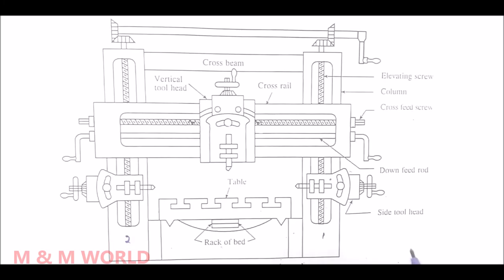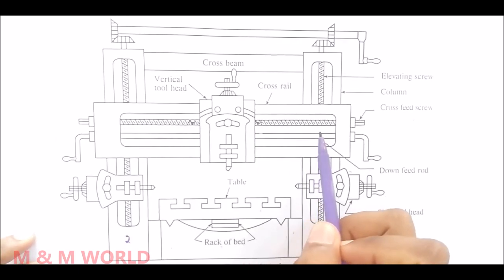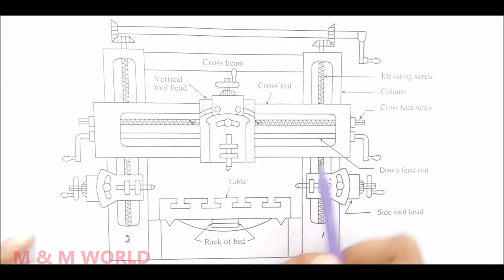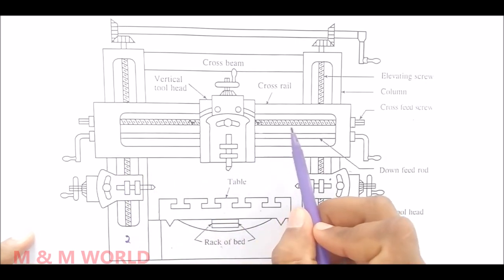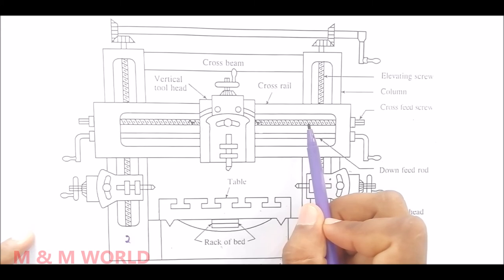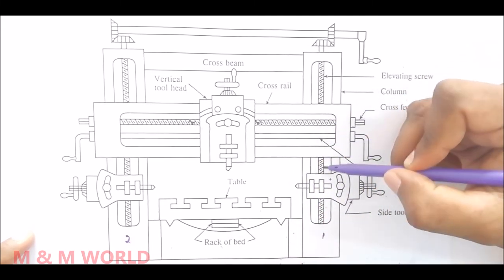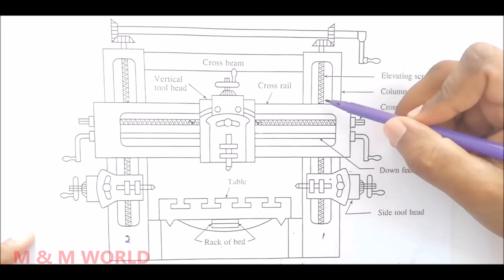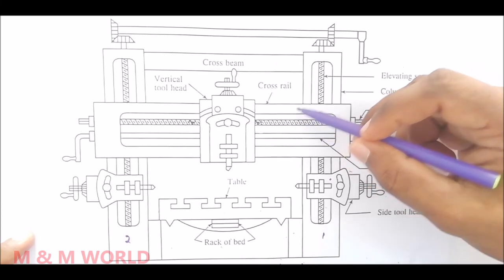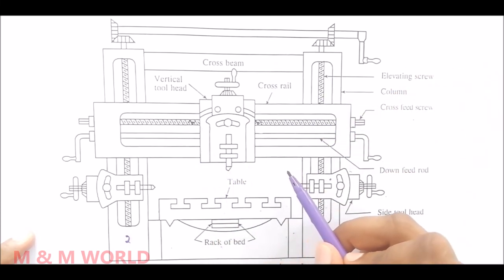Now the next part is cross rail. The cross rail is a rigid box-like casting connecting the two housings, and this construction ensures rigidity to the machine. The cross rail can be lowered or raised on the face of the housing and can be clamped at any convenient position.